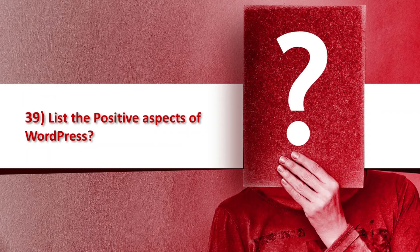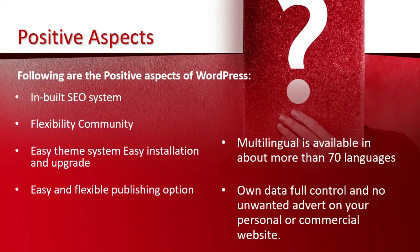Question 39: List the positive aspects of WordPress. It has an inbuilt SEO system, flexibility, it has a community, easy theme system, easy installation and upgrade, easy and flexible publishing options, multilingual support available in more than 70 languages, full control over your data, and no unwanted ads on your personal or commercial website.